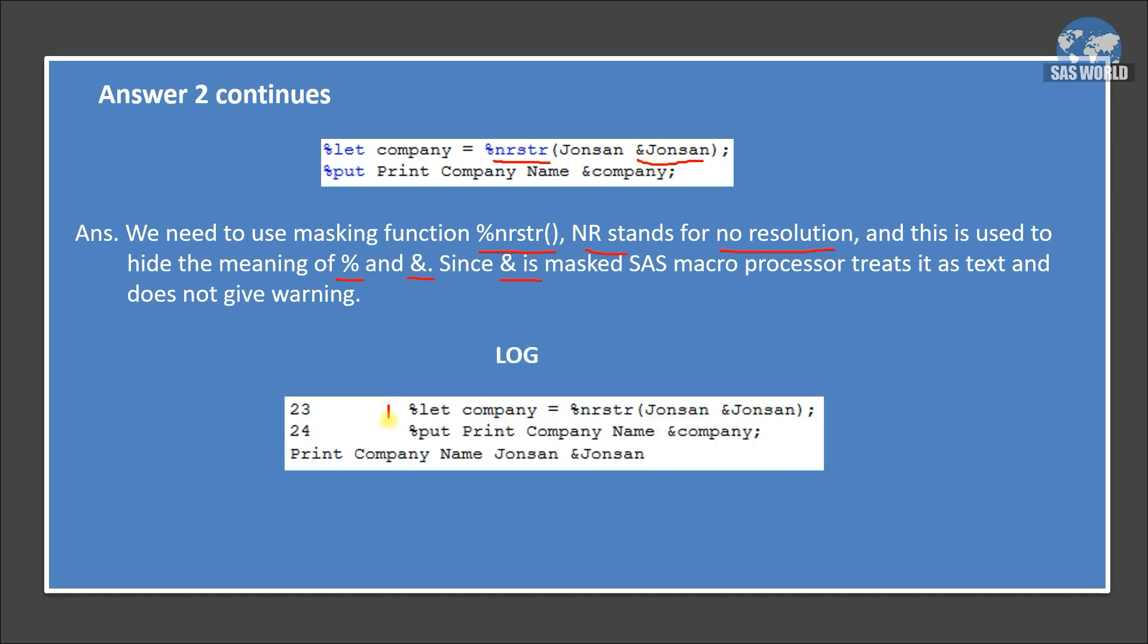Let's see the log. These are our statements that we have rewritten. So here we have Johnson and Johnson. Printed text in log is print company name Johnson and Johnson. But now you can see there is no warning in the log. So we can hide the meaning of ampersand and percent using percent NRSTR.